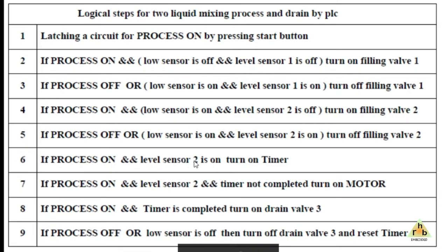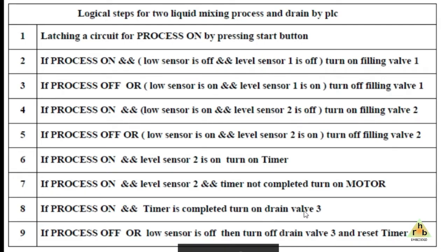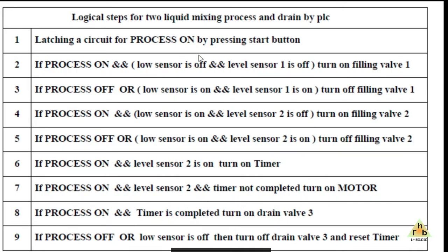For the mixing process: if the process is on and Level 2 sensor is on, we turn on the timer. To turn on the motor, the process must be on and Level 2 sensor must be on and the timer must not have completed — the motor runs for the timer duration, which is set to 10 or 20 seconds as required. For draining: if the process is on and the timer has completed, the drain valve turns on and the motor turns off. To turn off the drain valve and reset the timer, either the process is off or the low-level sensor turns off.